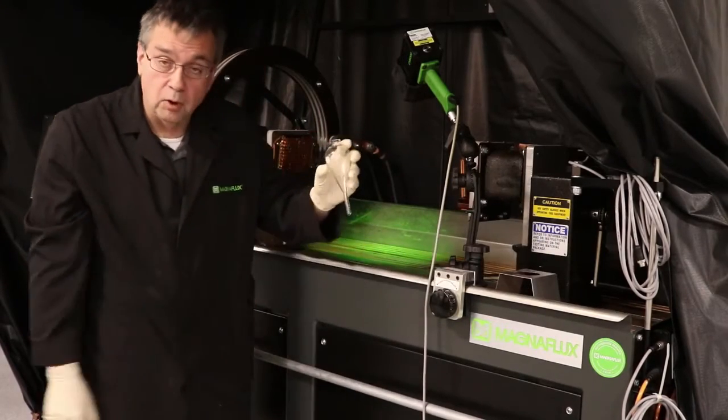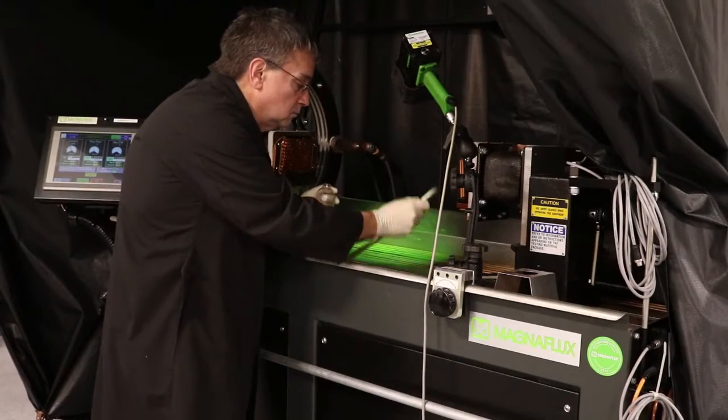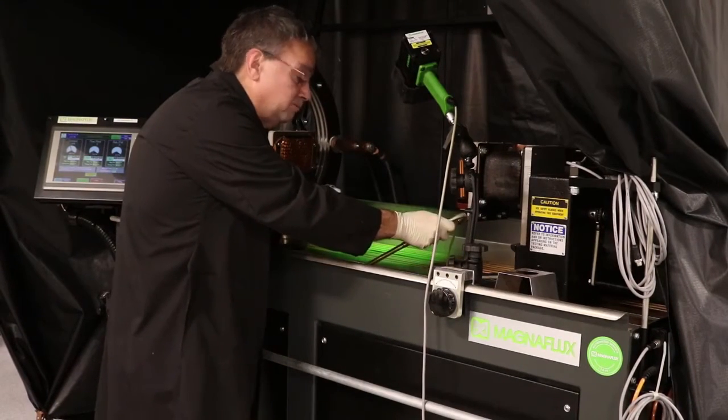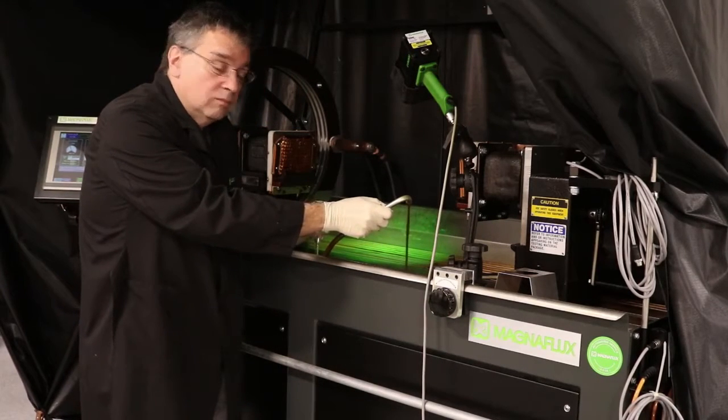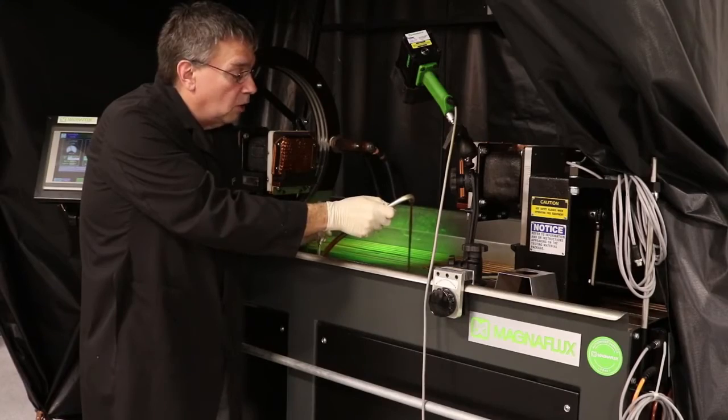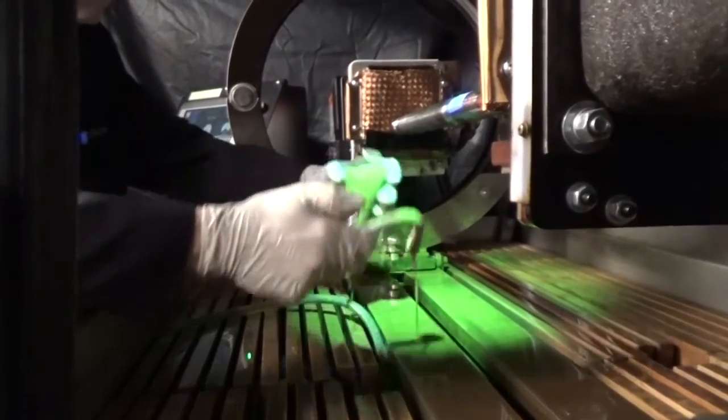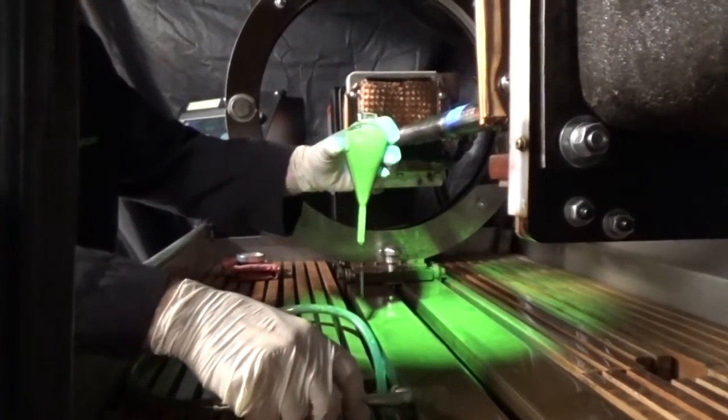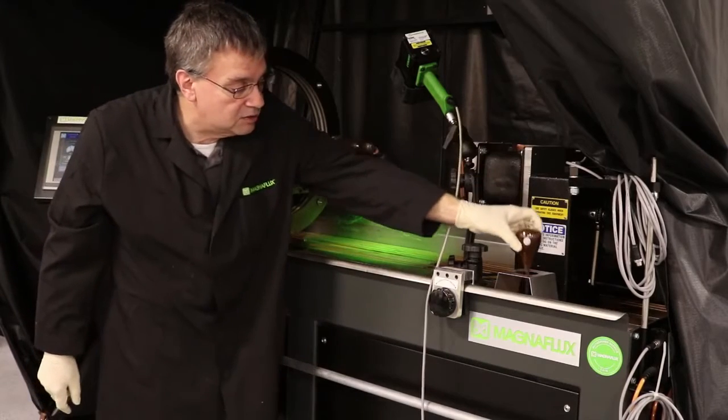We'll need a centrifuge tube, the one appropriate for the particles and fluid you're using in your bath. When your pump has been running, you run fluid through your bath hose until you get particles coming out. Then you fill the centrifuge tube up to 100 millimeters. After that, you place the centrifuge tube in the stand and let it sit.